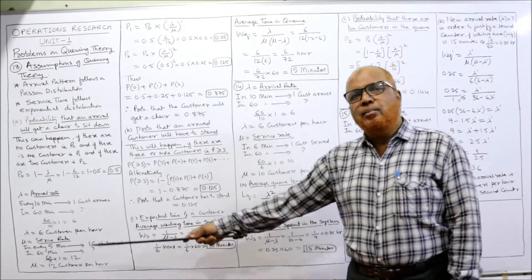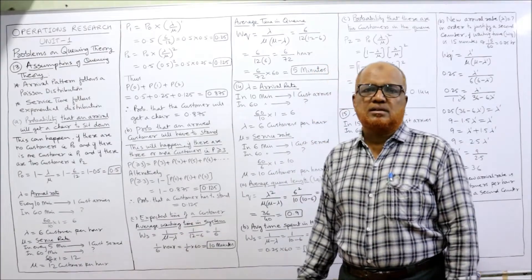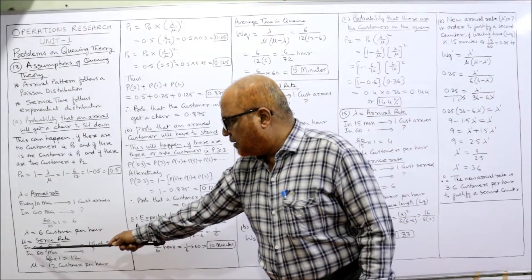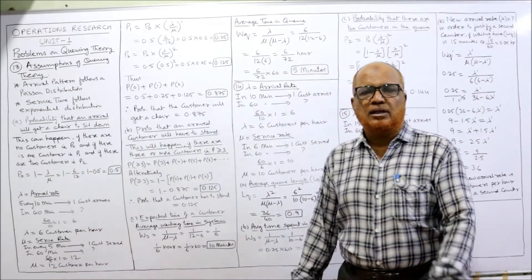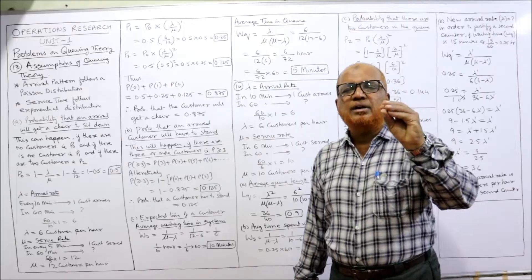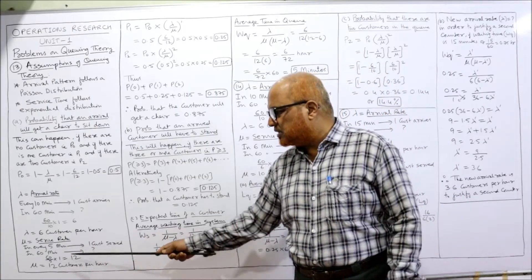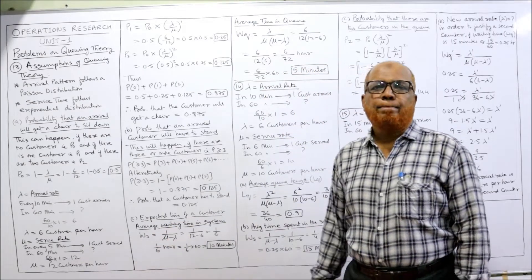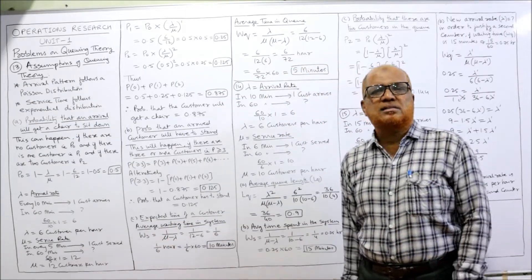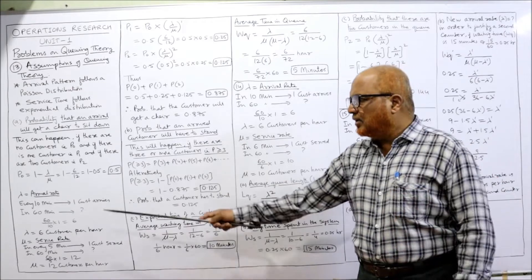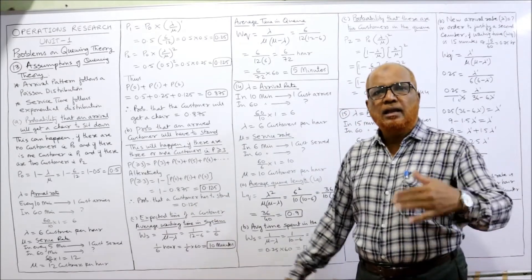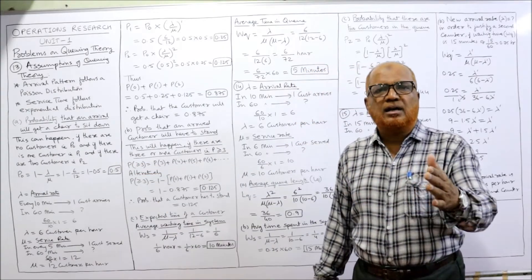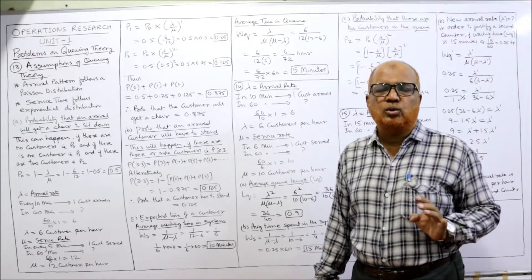Mu is the service rate: one customer served every 5 minutes. In 60 minutes, 60/5 = 12 customers. So service rate mu = 12 customers per hour, and arrival rate lambda = 6 customers per hour. Now we determine the probability that a new arrival will get a chair to sit.